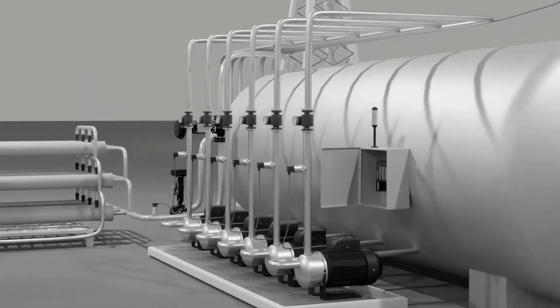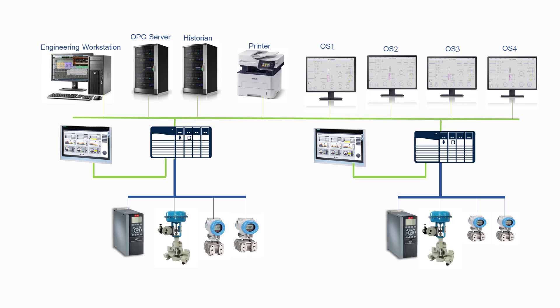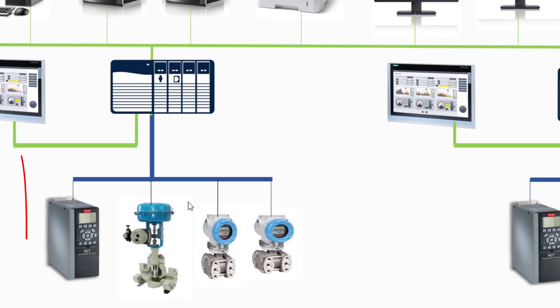Before we dive in, let's understand two types of architectures, factory-centered and remote. Let's start with factory-centered SCADA. In any process, you need instruments like control valves, transmitters, VFDs, and motors.